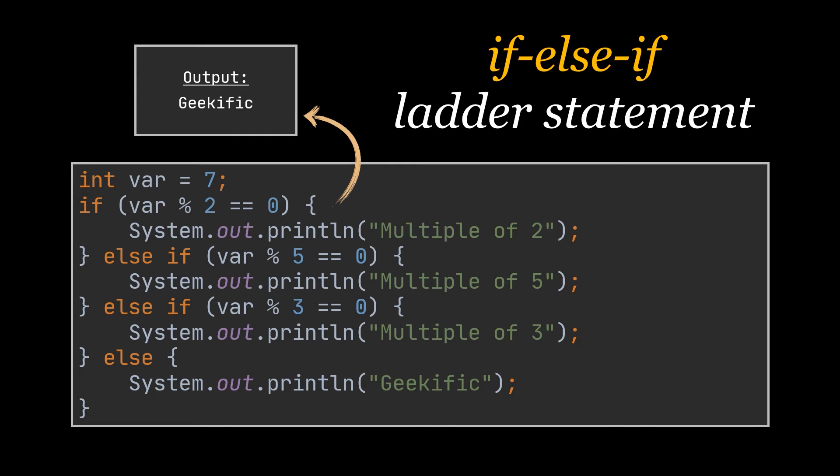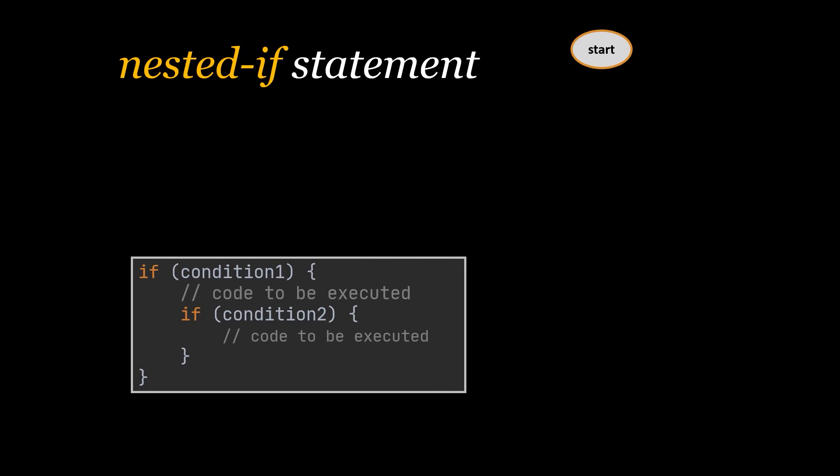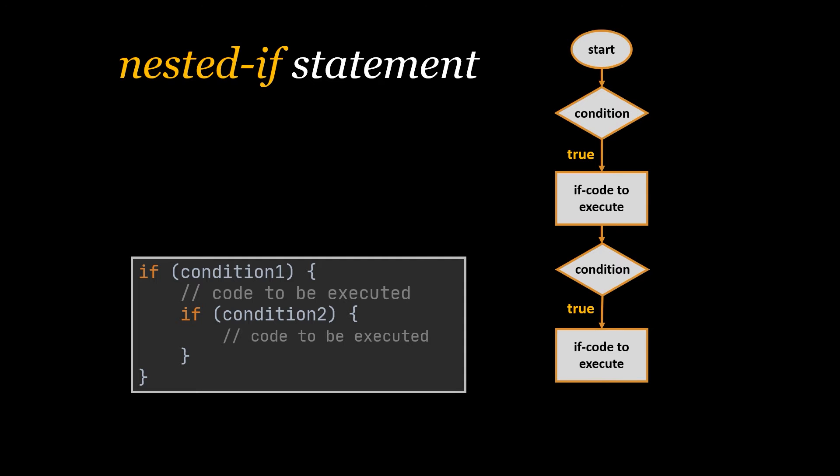Two if statements can be nested inside each other. After checking if the first condition resolves to true, we can go ahead, execute some code, and then call another if statement inside this first one. If the first condition is not met or is false, then the program won't even reach the second if statement to check its condition. In other words, the inner if block condition is tested only when the outer if block condition is true.